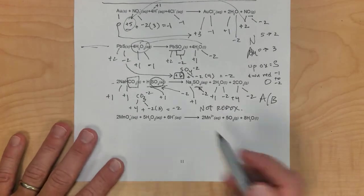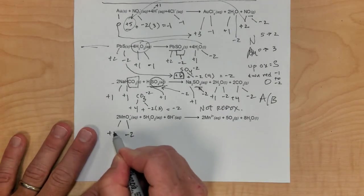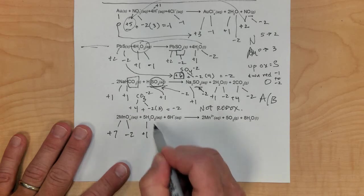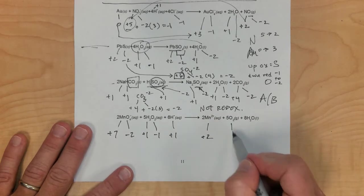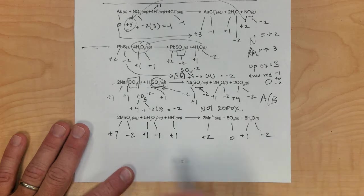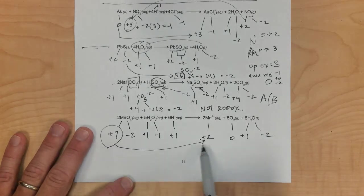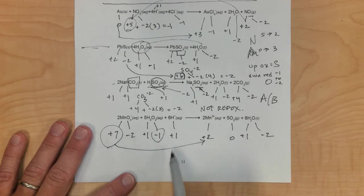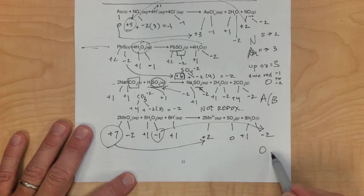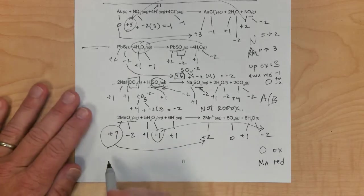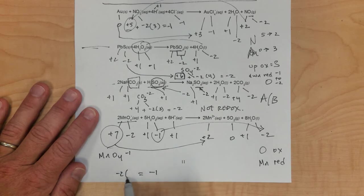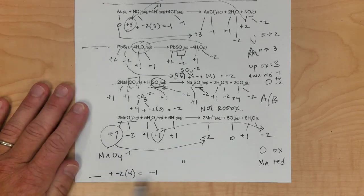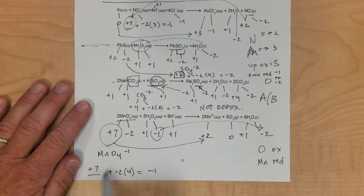Last one — assigning oxidation numbers quickly. Oxygen is negative 2, manganese is positive 7, hydrogen is positive 1, oxygen is negative 1 — that exception again — positive 1 for hydrogen, manganese is positive 2, oxygen is 0, hydrogen is positive 1, oxygen is negative 2. Manganese goes from 7 to positive 2 — it goes down in charge, so it's reduced. Oxygen goes from negative 1 to negative 2 — wait, that goes down too. Actually oxygen is oxidized here. For MnO4⁻: oxygen is minus 2 times 4, so something plus negative 8 equals negative 1, meaning manganese must be positive 7.